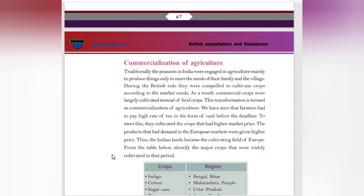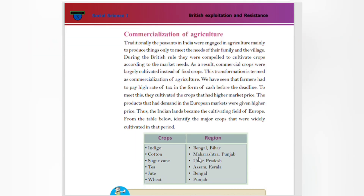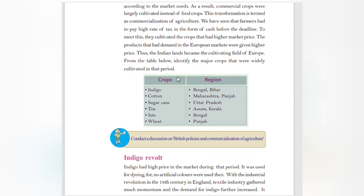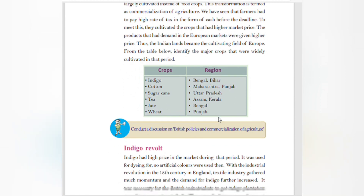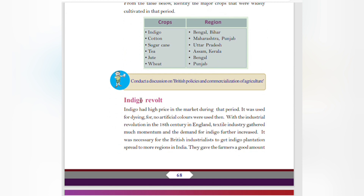The major crops widely cultivated in this period included: Indigo in Bengal and Bihar; Cotton in Maharashtra and Punjab; Sugarcane in Uttar Pradesh; Tea in Assam and Kerala; Jute in Bengal; and Wheat in Punjab. Indigo Revolt: Indigo had a high price in the market during that period. It was used for dyeing, as no artificial colors were used then. The Industrial Revolution of the 18th century in England gave great momentum to the textile industry and further increased the demand for indigo.